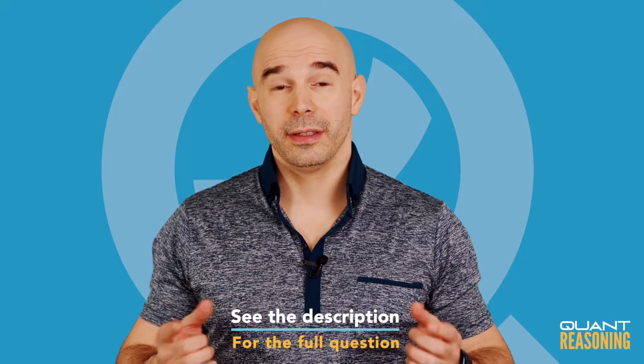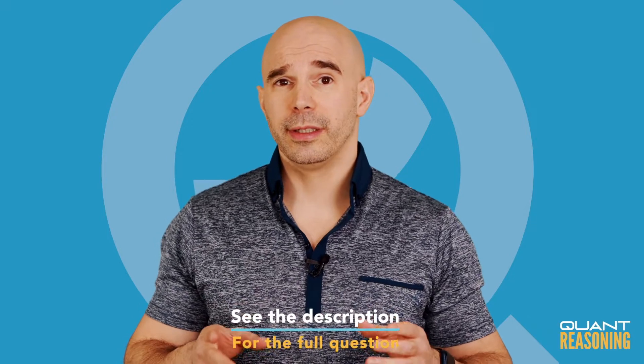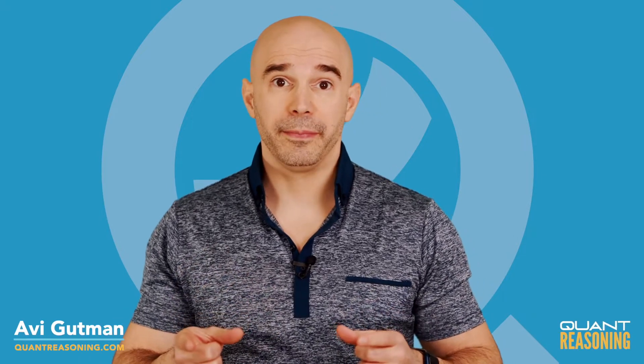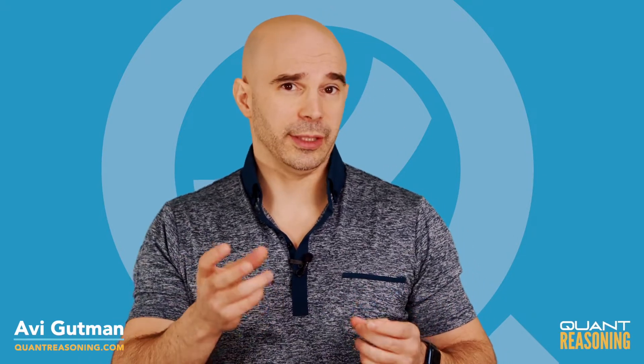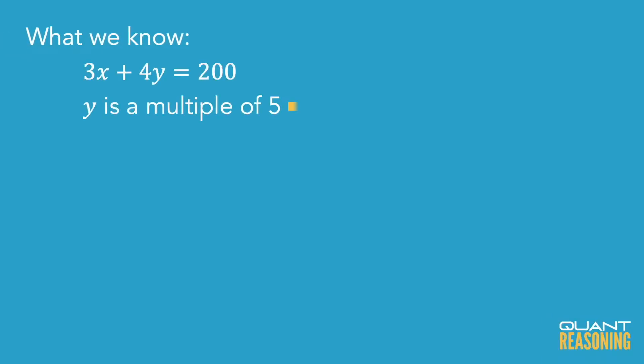Okay, what do we know here? We know that 3x plus 4y is 200, and we also know that y is a multiple of 5, which means 4y. The reason I'm talking about 4y is because that's what we have in the equation. If y is a multiple of 5, 4y must be a multiple of 20.